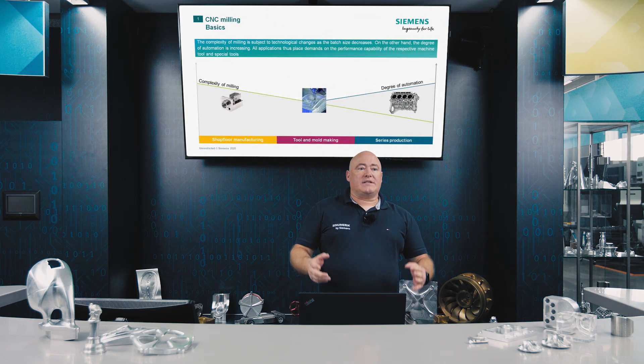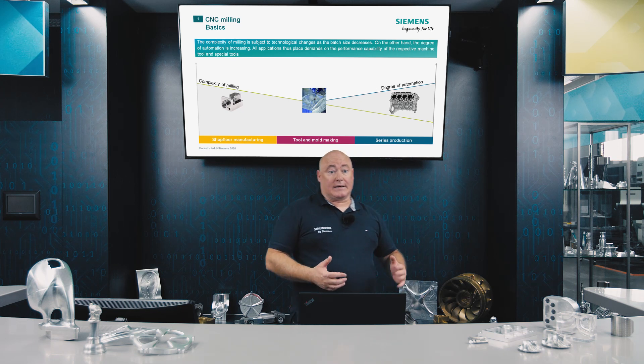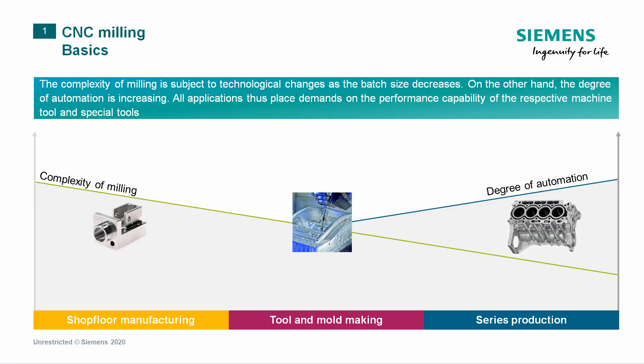The complexity of milling is subject to technological changes as batch sizes get smaller. Generally, the level of automation increases as the complexity of milling decreases. Exceptions confirm the rule, but overall this principle can be applied at a general level.